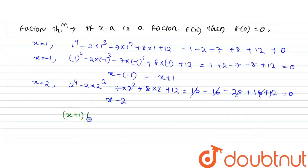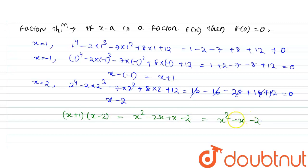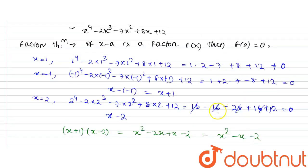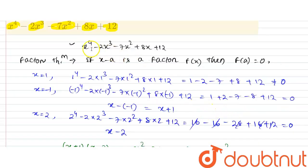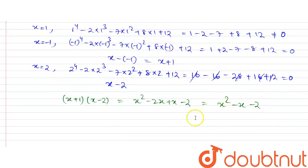So I have found two factors of this polynomial: x plus 1 and x minus 2. Multiplying these gives x² minus 2x plus x minus 2, which equals x² minus x minus 2. If I divide the original polynomial x⁴ minus 2x³ minus 7x² plus 8x plus 12 by x² minus x minus 2, I will find the other two factors.